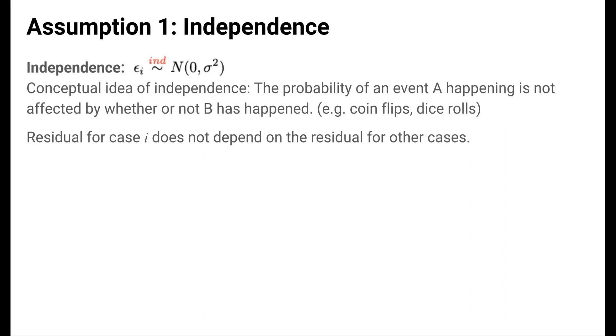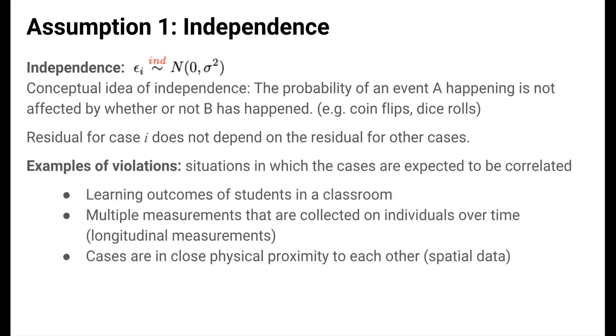For example, the probability of getting a residual of 3 for case 1 should not be affected by the values of the residuals for the other cases. When might the independence assumption be violated? In situations where we would expect the data to be correlated.